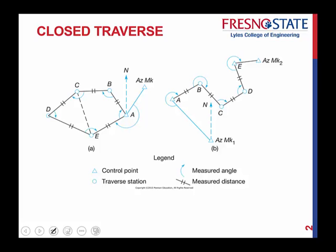Or you have a non-geometrically closed traverse. What does that really mean? Well, if you look at A, it has what we call a control point. A control point means we are actually setting our instrument up on top of this control point. Unlike differential leveling where we set up wherever we want, here we're using the actual location of the control point, setting up on top of it and making measured angles and distances — measuring azimuths, interior angles — to allow us to go through there.